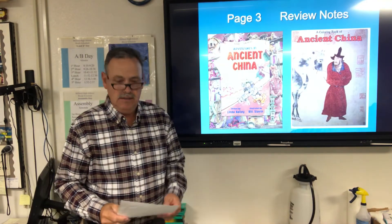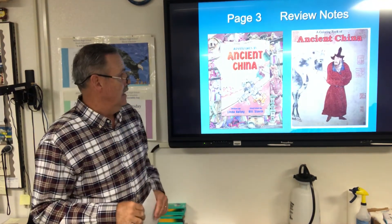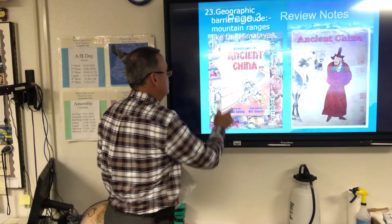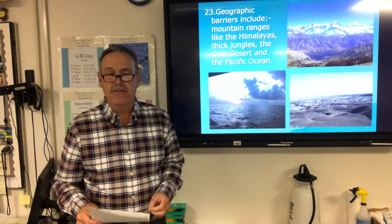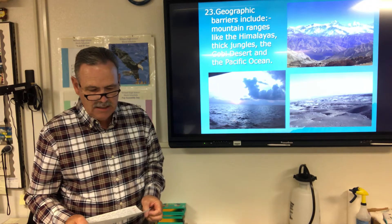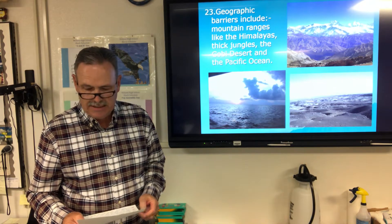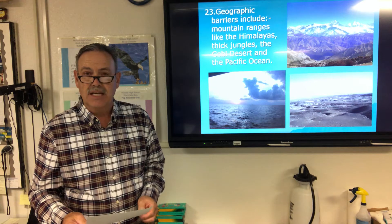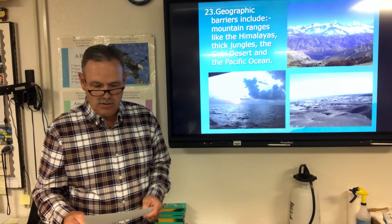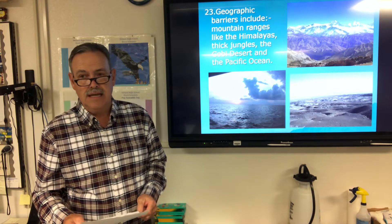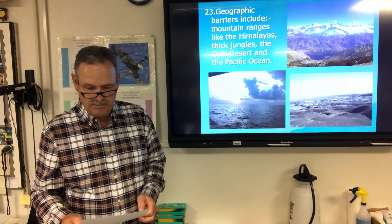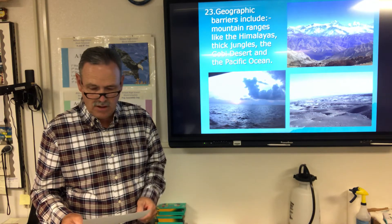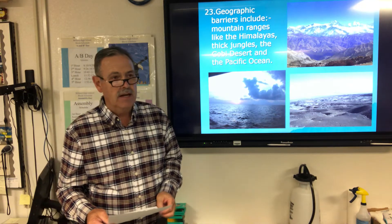We're continuing with Chapter 3, this is our third page of notes. These two pages, page 3 and 4, will deal with China. Just like with India, we mentioned some geographic features — same with China. They include mountain ranges such as the Himalayas that border India on the southwest part of China, thick jungles, the Gobi Desert between China and Mongolia, and the Pacific Ocean on the east and southeast coast of China.